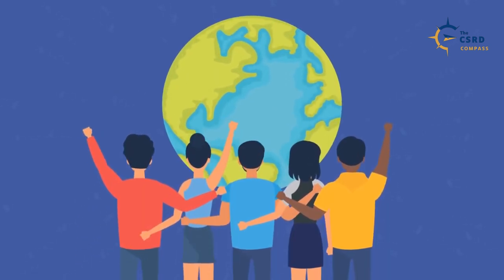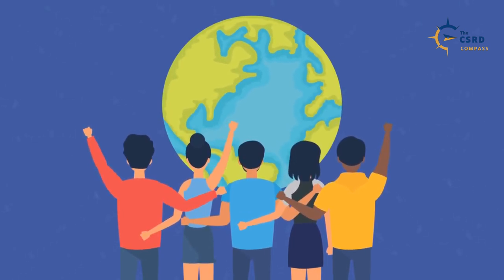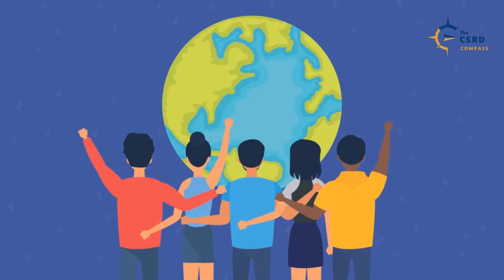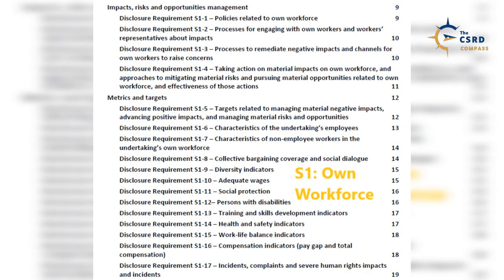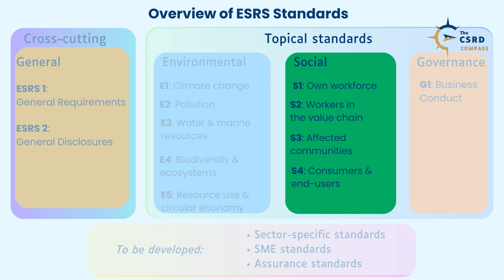3. Social Matters: This includes detailed disclosures on sustainability information related to social matters, including human rights, as outlined in the four ESRS social standards. Specifically, companies must always disclose several matters — disclosure requirements S1.1 to S1.9 — related to its own workforce following ESRS S1, Own Workforce. For other social matters, companies will apply a rigorous double materiality assessment process to identify and disclose other material sustainability information. These matters relate to S1, Own Workforce (requirements S1.10 to S1.17); S2, Workers in the Value Chain; S3, Affected Communities; and S4, Consumers and End Users.